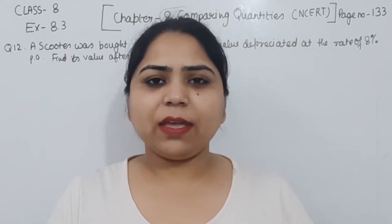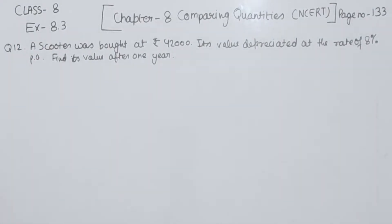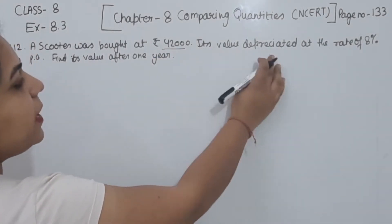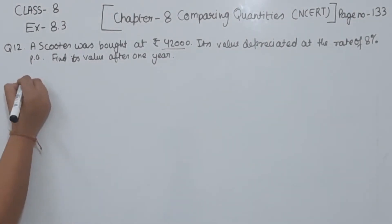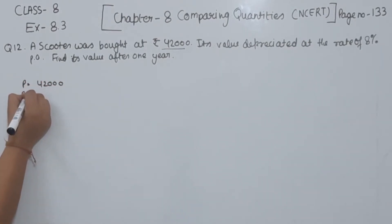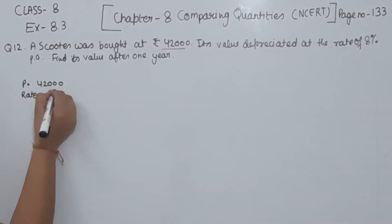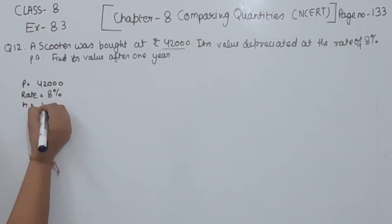Hello everyone, this is Preeti here with another question of Exercise 8.3, page number 133, question number 12. A scooter was bought at rupees 42,000. Its value depreciated at the rate of 8% per year. We need to find its value after 1 year. The principal amount is rupees 42,000, the rate of depreciation is 8%, and the time is 1 year.